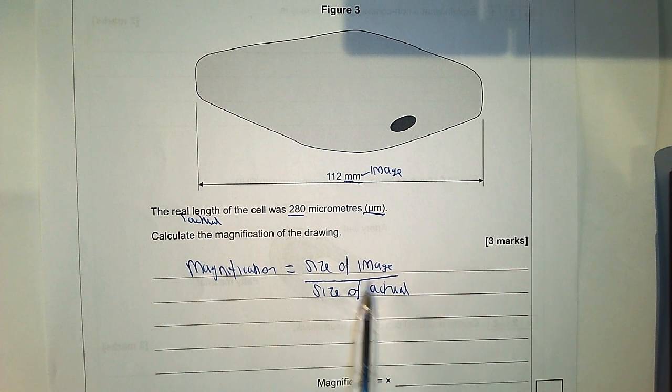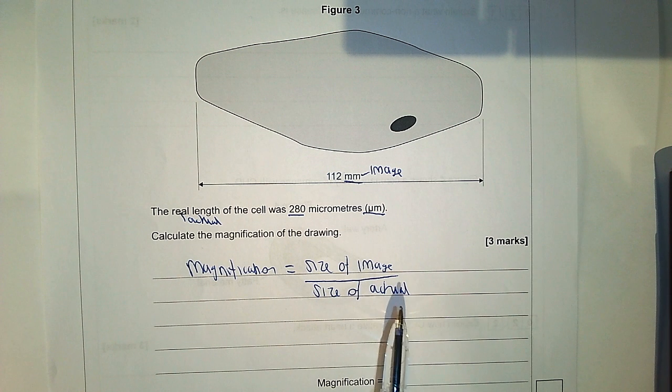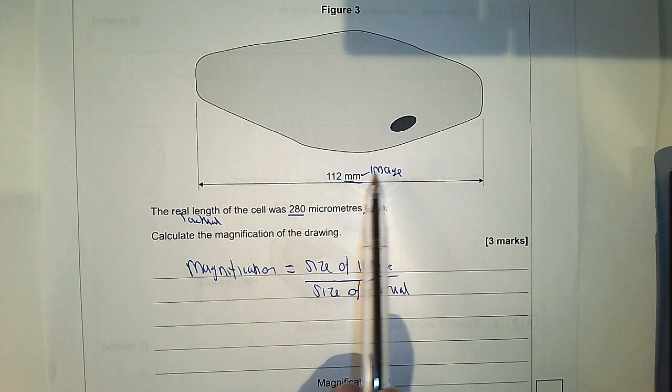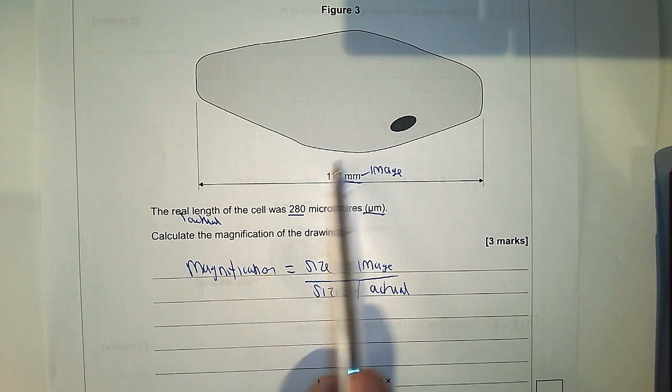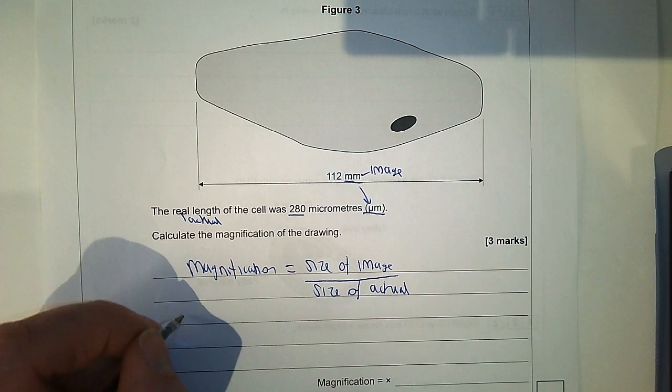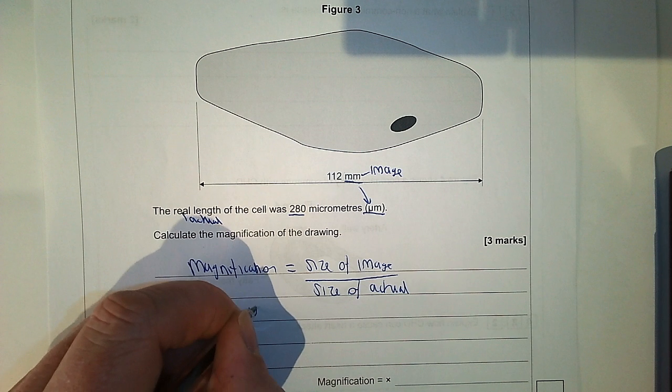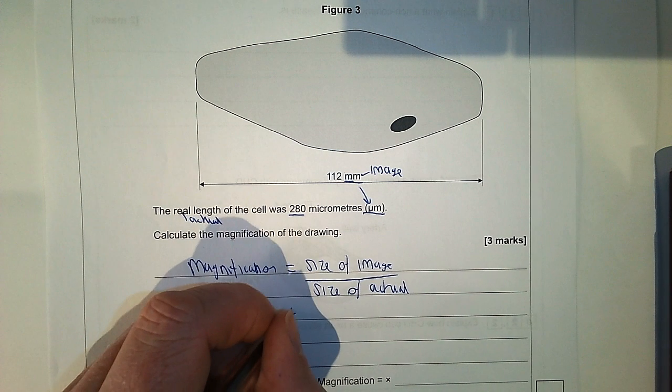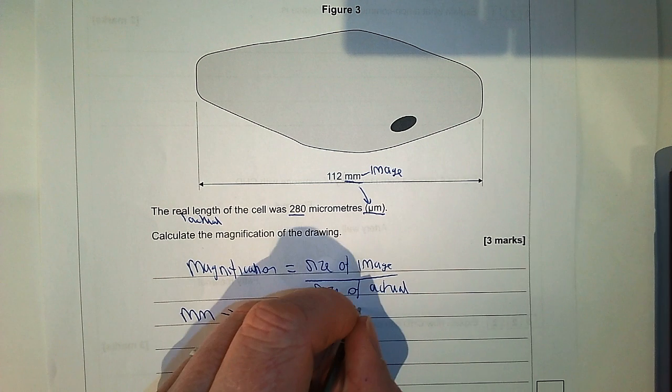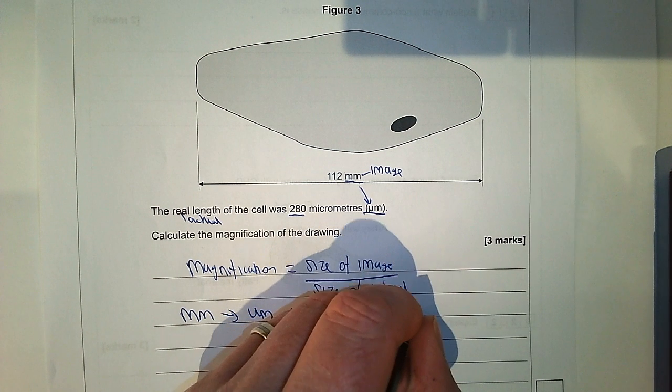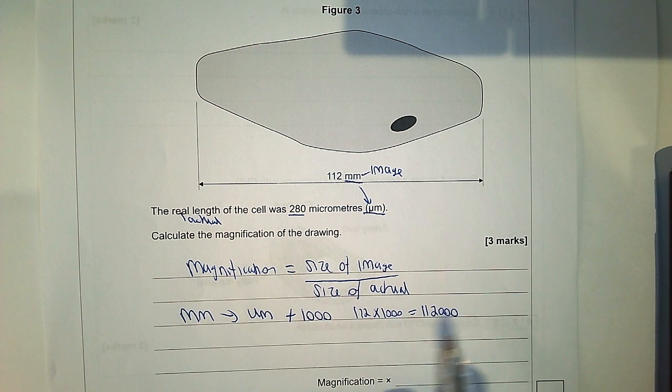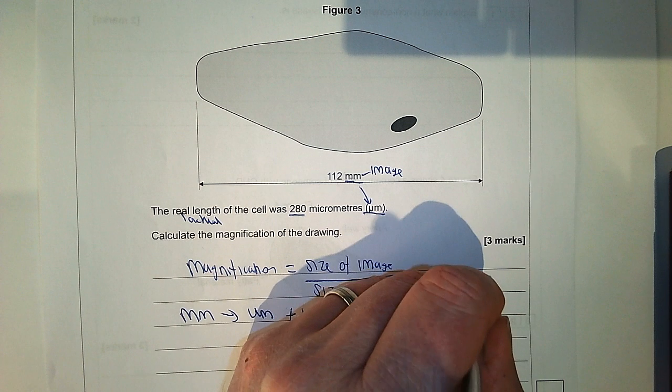The second thing we need is these two numbers in the same units. We've got micrometers for the real length and millimeters for the image, so I'm going to convert the millimeters to micrometers. To convert millimeters to micrometers you times by a thousand. So we've now got our image in micrometers.